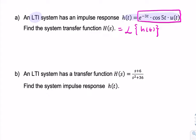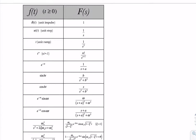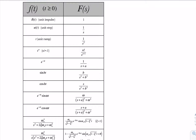The best place to start is the Laplace transform table. We want something that has an exponential, a cosine, and a unit step. The signals in the time domain are all defined for T greater than or equal to 0, which is equivalent to having a unit step multiplied by each of them, because the unit step is only non-zero for T greater than 0.